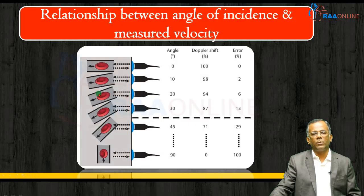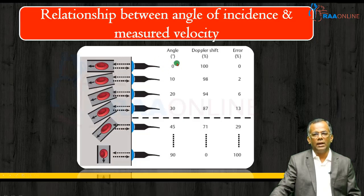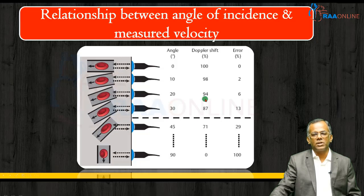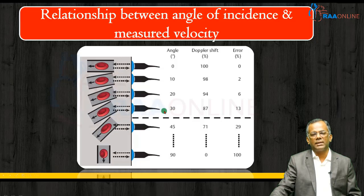There is a relationship between the angle of incidence of the ultrasound beam and the movement of the RBC. If the angle of incidence is zero — that is, parallel — the measured Doppler shift is 100% accurate with no error. But as theta reaches 30 degrees, only 87% of the actual Doppler shift is measured, giving a 13% error. This is the cutoff limit: if the angle of incidence exceeds 30 degrees, the Doppler shift measured is erroneous. At 90 degrees, no Doppler shift is measured and the error is 100%.